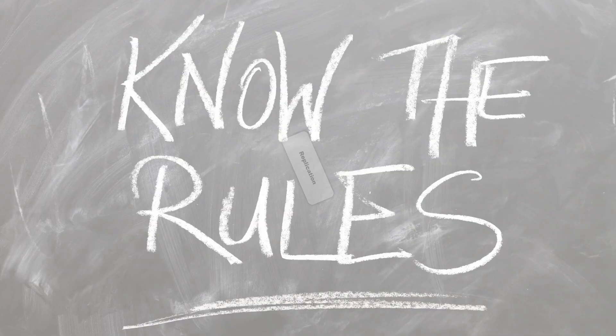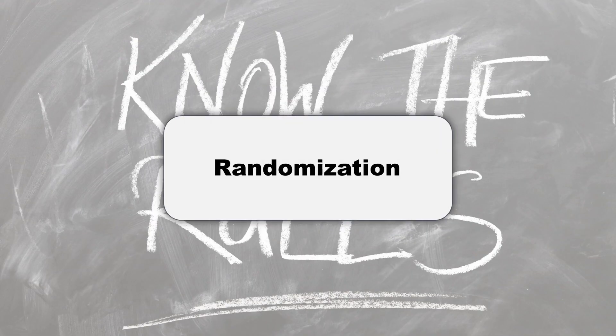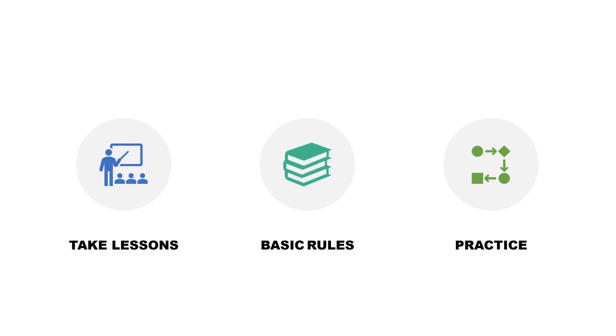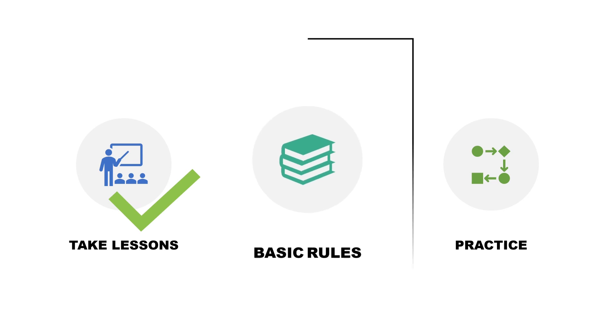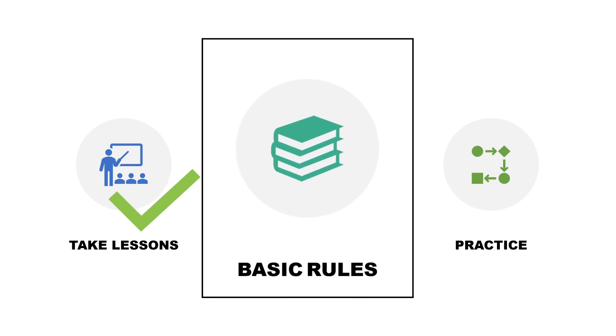For DOE there are really just three basic rules that you need to know about: replication, randomization, and blocking. The way to master a DOE is as easy as learning to drive a car — you need to take lessons, learn the three basic rules of DOE, and you need a lot of practice. Since you're watching this video you can already check mark the taking lessons tab. So let's look at these three basic rules.